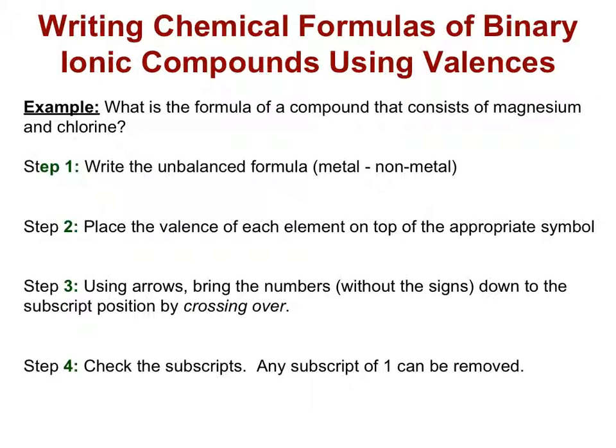In this video we are going to review how to name simple binary ionic compounds. We're going to start with writing a chemical formula from the two elements that make up our compound. Our example is what is the formula of a compound that consists of magnesium and chlorine.